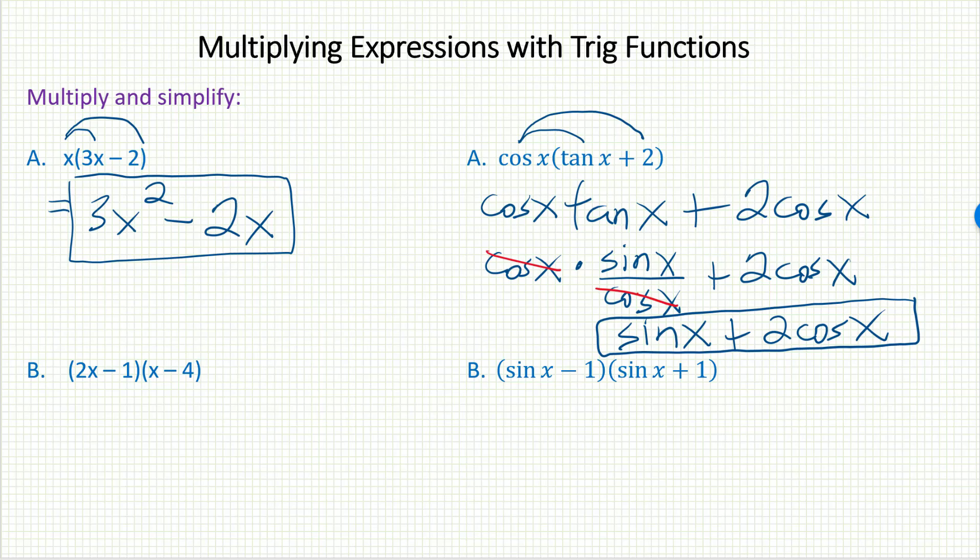What about in letter B? Well, in algebra, when I see a binomial times another binomial, that's where we use the FOIL method of multiplication. First, outer, inner, last. First would be 2x squared.